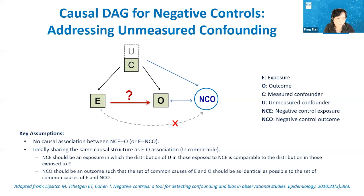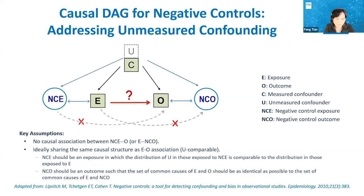Similarly, a negative control outcome is a variable that is not causally related to the exposure, but shares the same potential causal bias with the study outcome. In summary, a negative control variable by design should have at least two clear assumptions: the non-causality assumption, and sharing the same causal structure of bias.